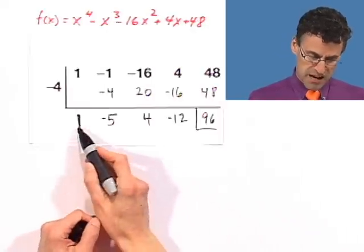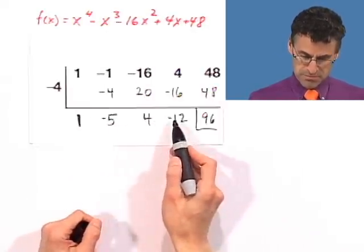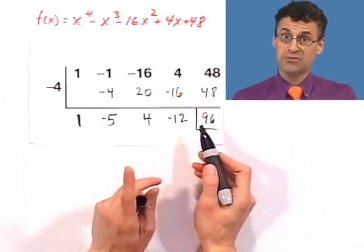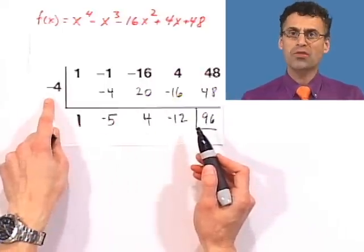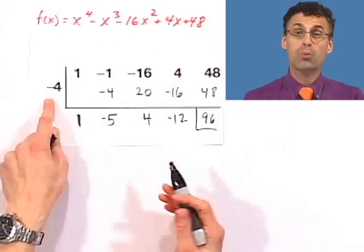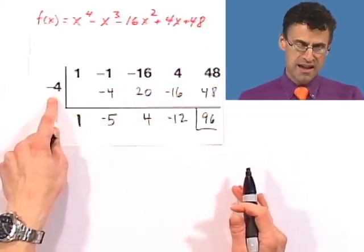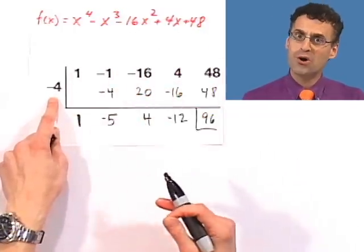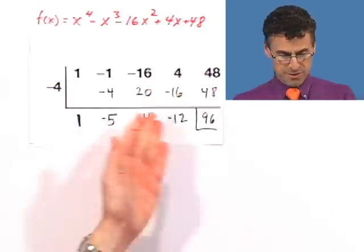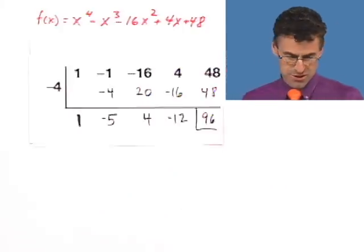But notice that the signs alternate - plus, minus, plus, minus, plus. Which means that, in fact, while this is not a root, all the roots or all the zeros of the polynomial associated with this polynomial will be greater than negative 4. Negative 4 is a lower bound for all the zeros or all the roots. That's actually really cool. Just by doing this quick synthetic division, we got that information.